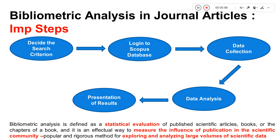The most important thing when you talk about bibliometric analysis is how to do it. Basically, it involves exploring huge volumes of data which have already been published in the Scopus database. Only papers published in Scopus will be reflected, and using that as a base you can find out how much work has been done in a particular field or domain where you are trying to write a research paper.